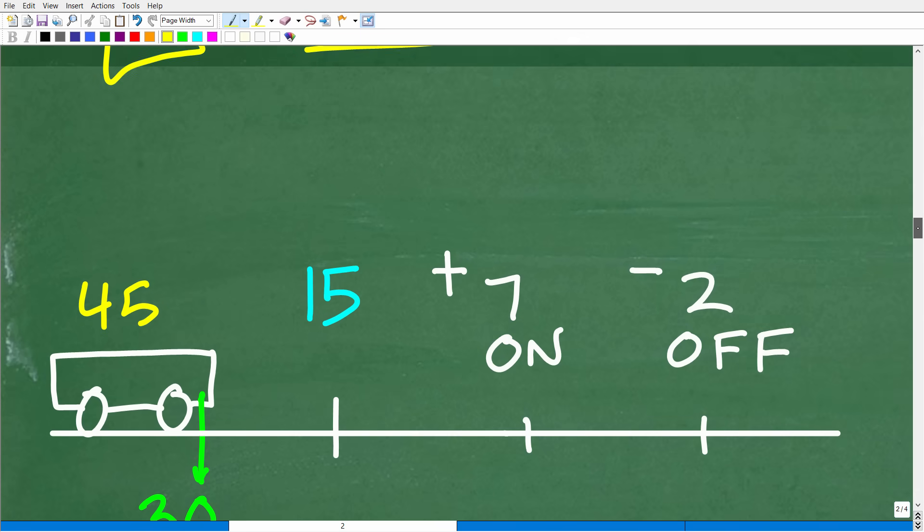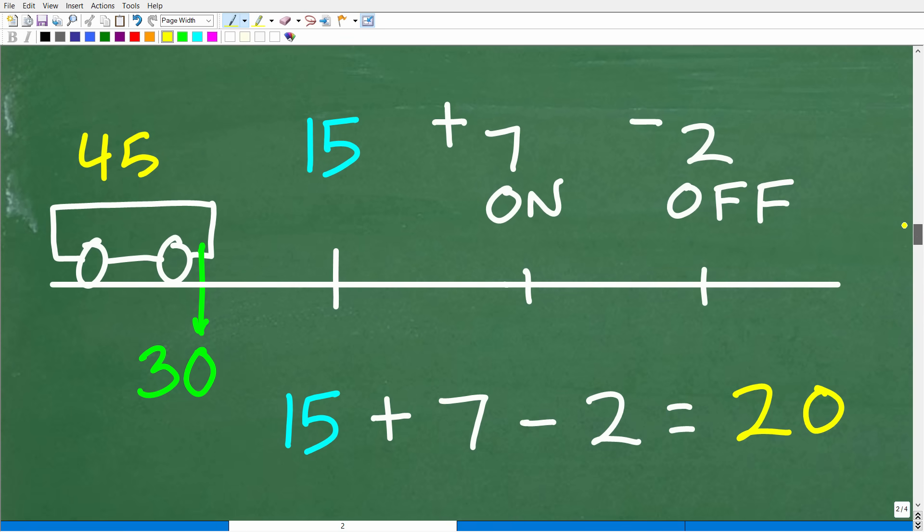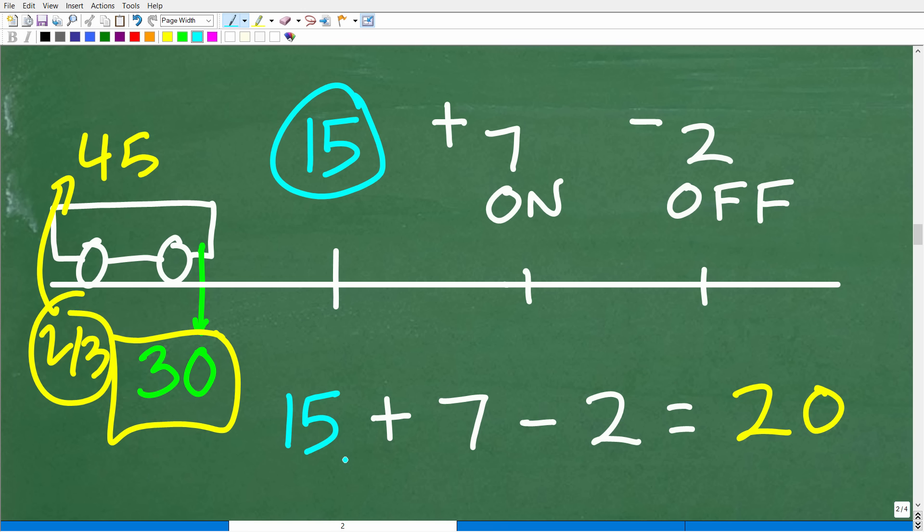All right, so let's go ahead and finish up this problem. Not too much more to do here, right? So here is the problem. We started off with a bus of 45 people. Two-thirds of those folks get off and depart the bus. That's 30, right? So 30 leave. So that leaves us with 15 people on the bus. So seven more people are going to get on the bus. So we're going to add seven to those folks.